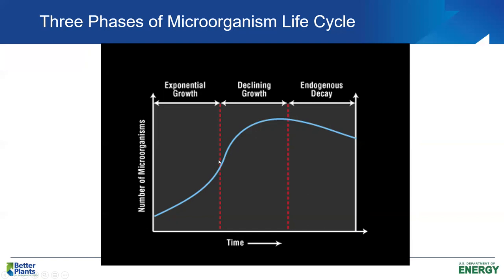As we move along the growth curve, food becomes less available and growth rate falls off — we call this the declining growth phase. This is generally where we get our best settling activated sludge, a good distribution of microorganisms, and probably our best settling sludge. As we continue into extended aeration, we enter endogenous decay: most food has been used up and microorganisms are feeding on themselves — endogenous respiration — oxidizing their own protoplasm to generate energy to stay alive.